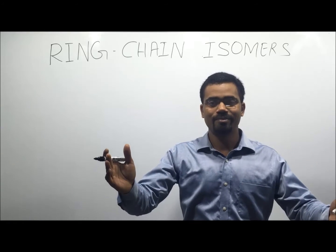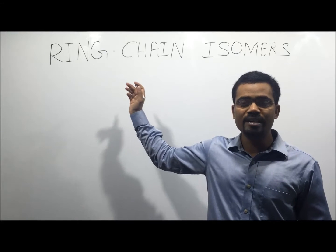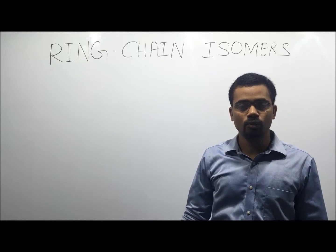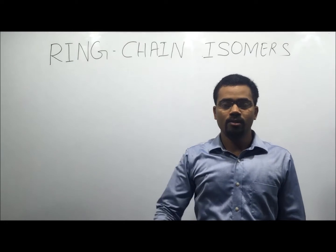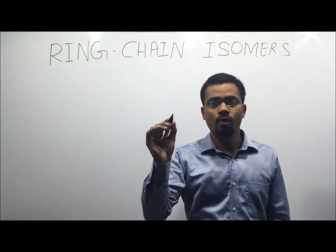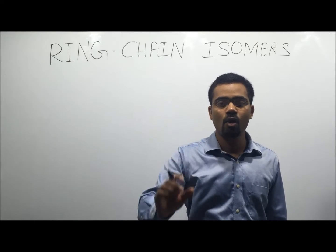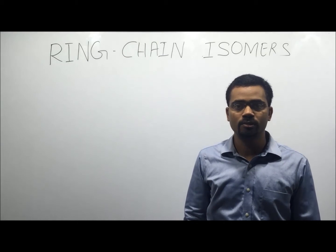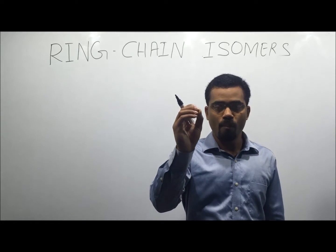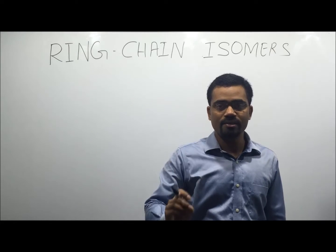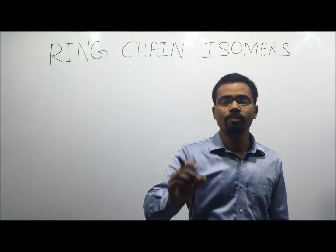Ring chain isomers. The structural isomers which differ in the cyclic nature of the parent chain are called ring chain isomers. That is, if one compound has an open chain as a parent chain, then the other compound must have a closed chain as a parent chain.